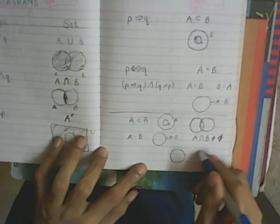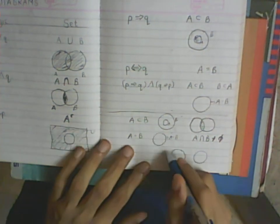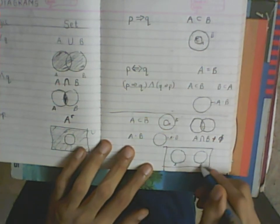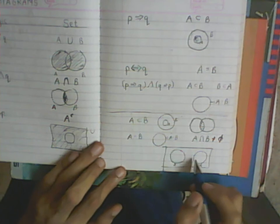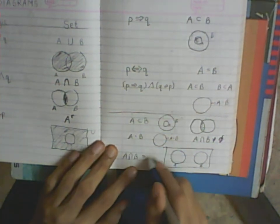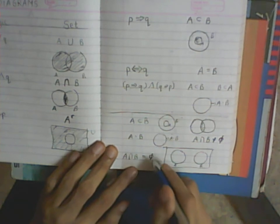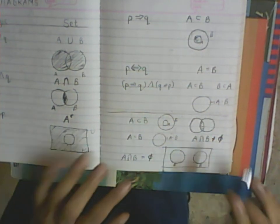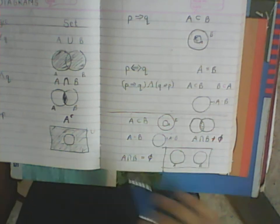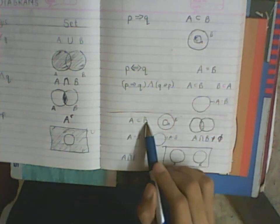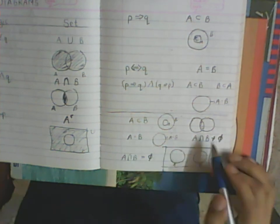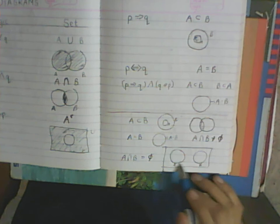The last possible case is that you have a disjoint set — set A and set B are completely disjoint within the universe. In this case, A intersection B is empty because there is nothing in common. So you will only have these four kinds of possibilities: either one of them is a subset of the other, or both sets are the same, or they have something in common, or they have nothing in common.